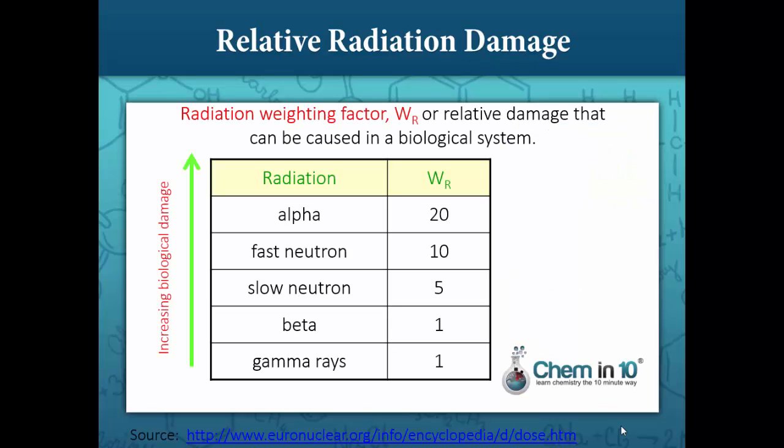The most penetrating forms of radiation are not necessarily the most damaging. In fact, the opposite is true. Alpha particles are the most damaging form of radiation, as can be seen by this chart of the radiation weighting factor for each type of radiation. Alpha particles can cause the most biological damage because of their size and bulkiness. Luckily, alpha particles are the easiest to protect against.